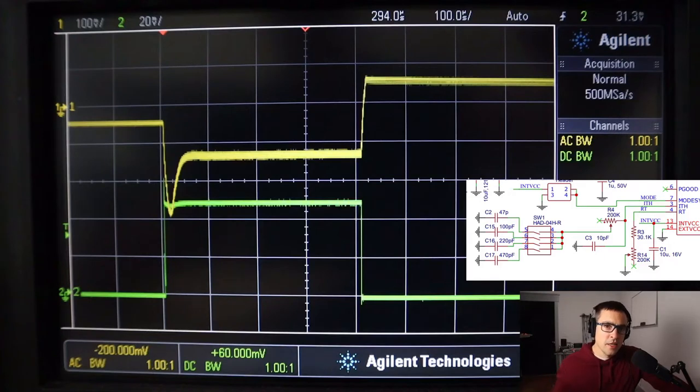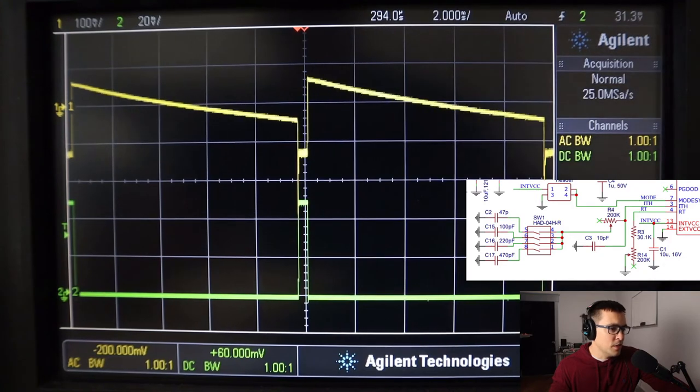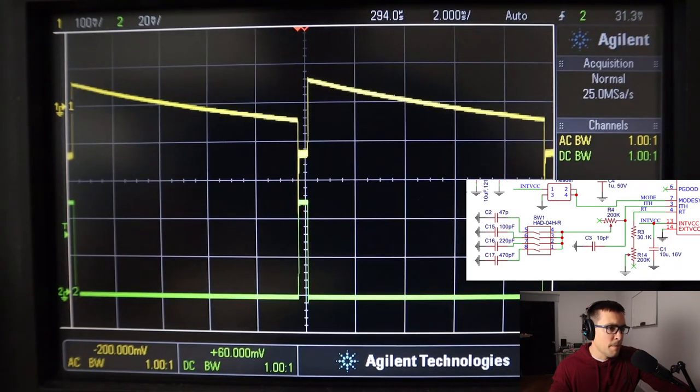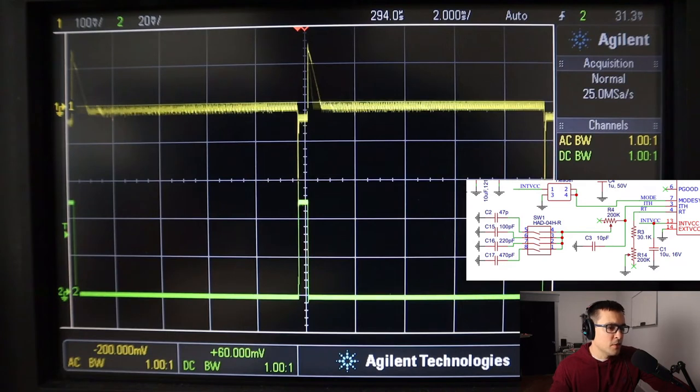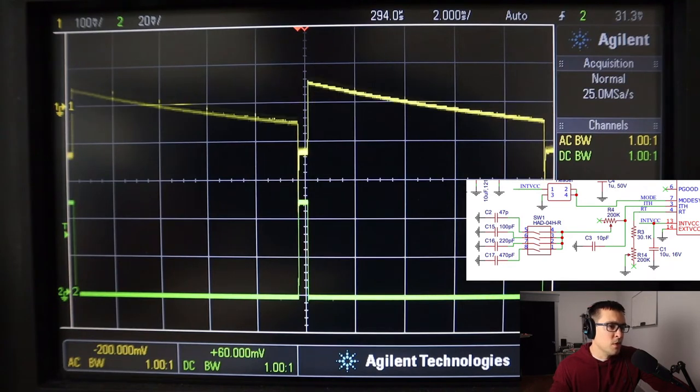Now let's take our same compensation values, but change the light load mode from force continuous to burst mode. In this case, you can see that we have the same shape for our transient response, but something else is going on. Because once the transient is over, the output voltage goes up, but then really slowly starts to decay. And if we zoom out, we can see how pronounced it really is.